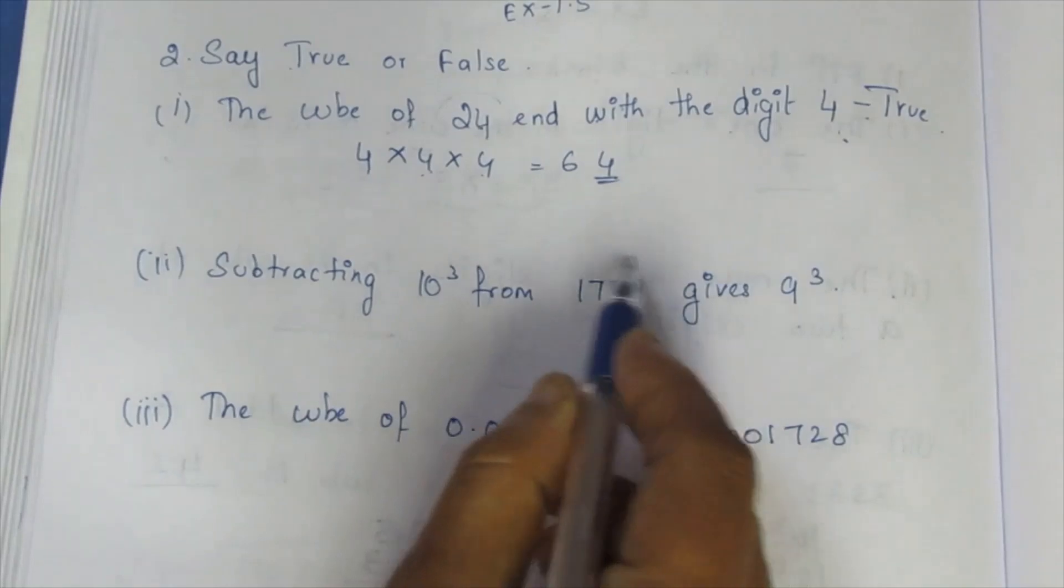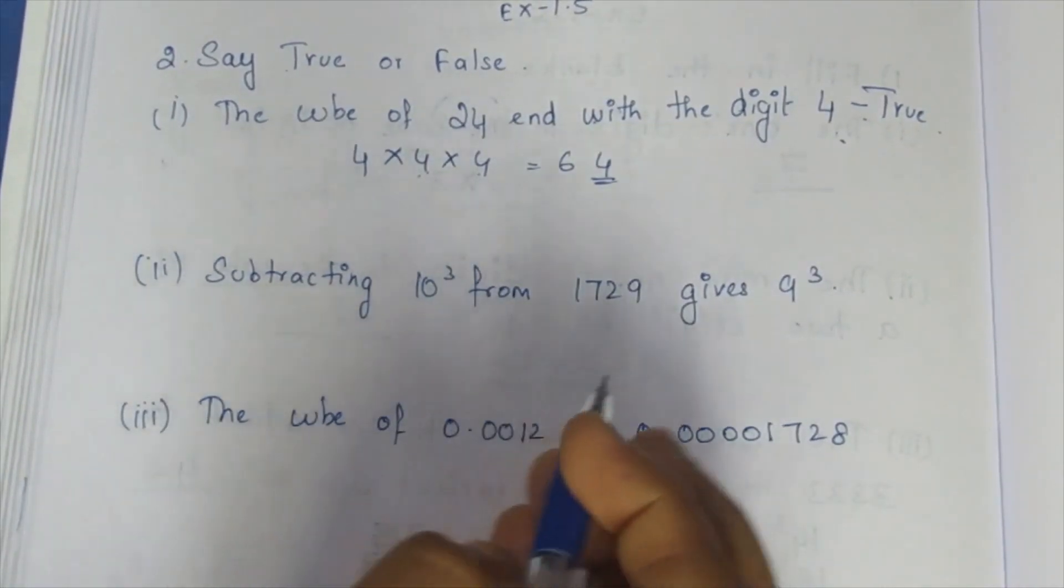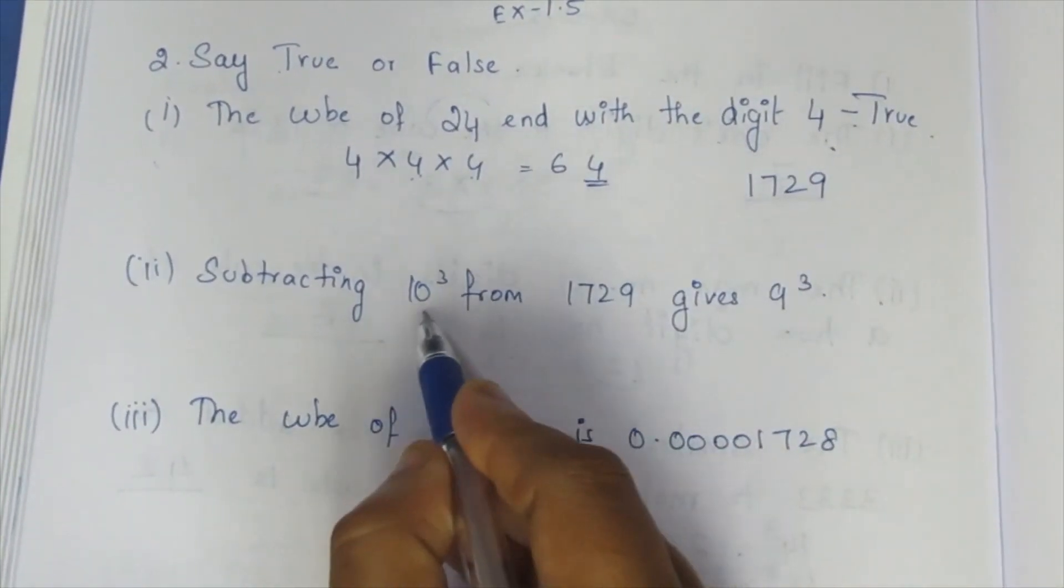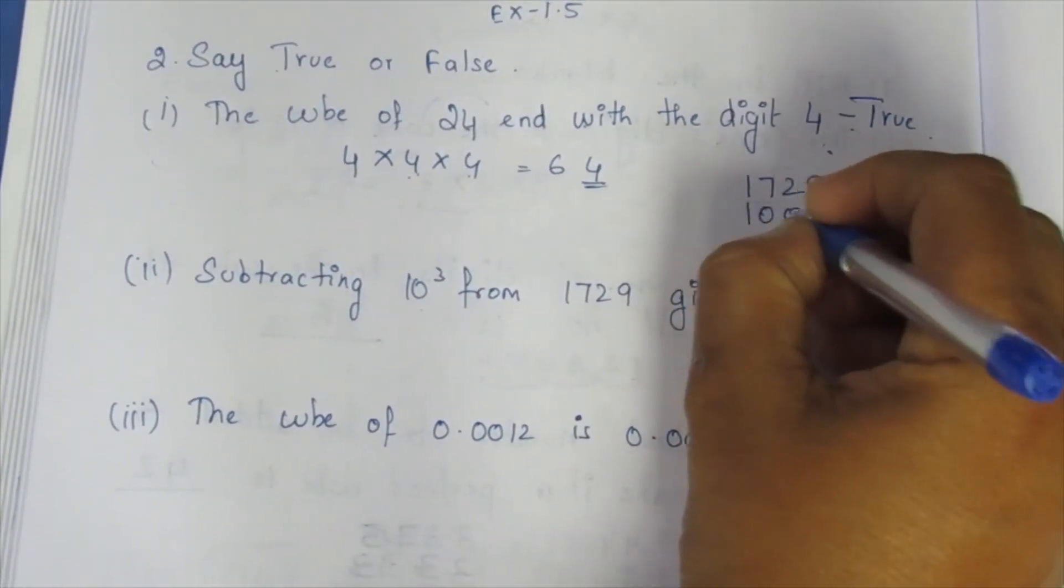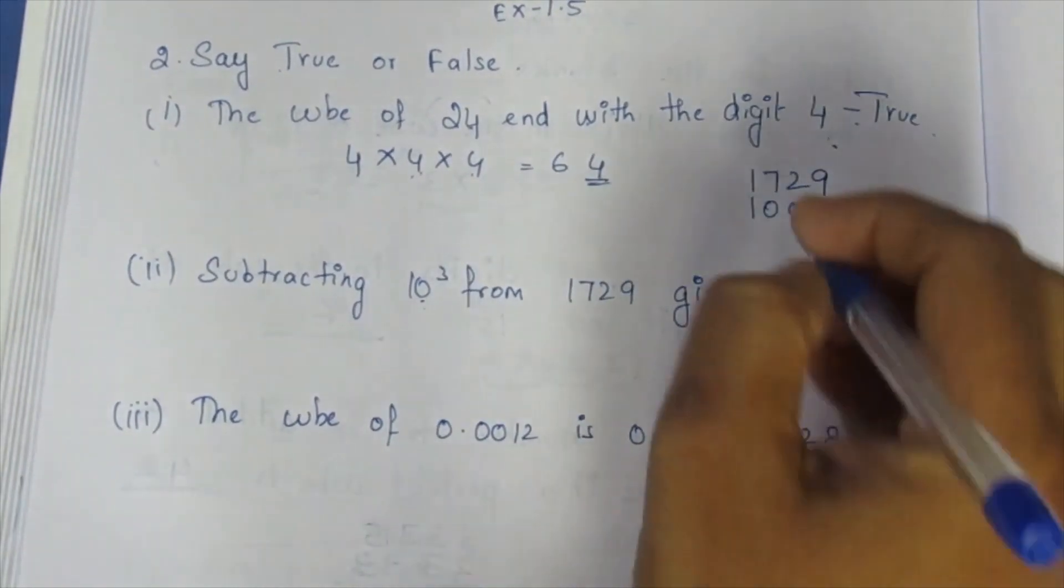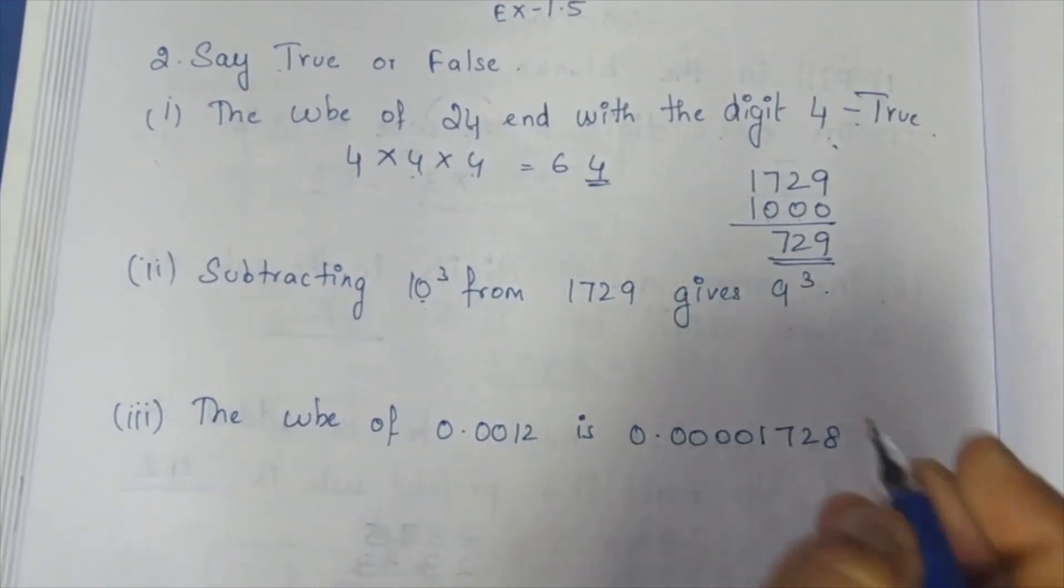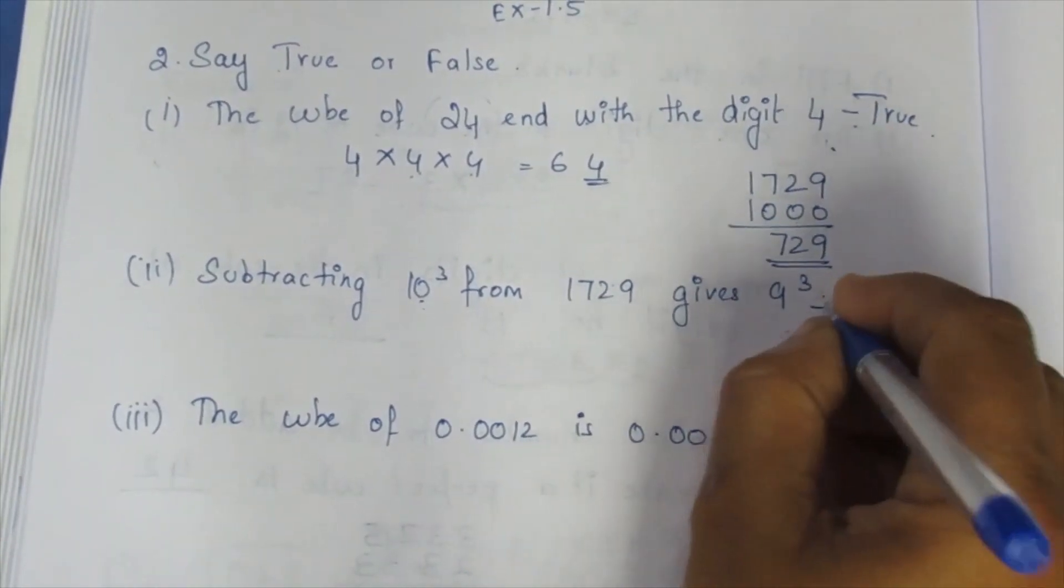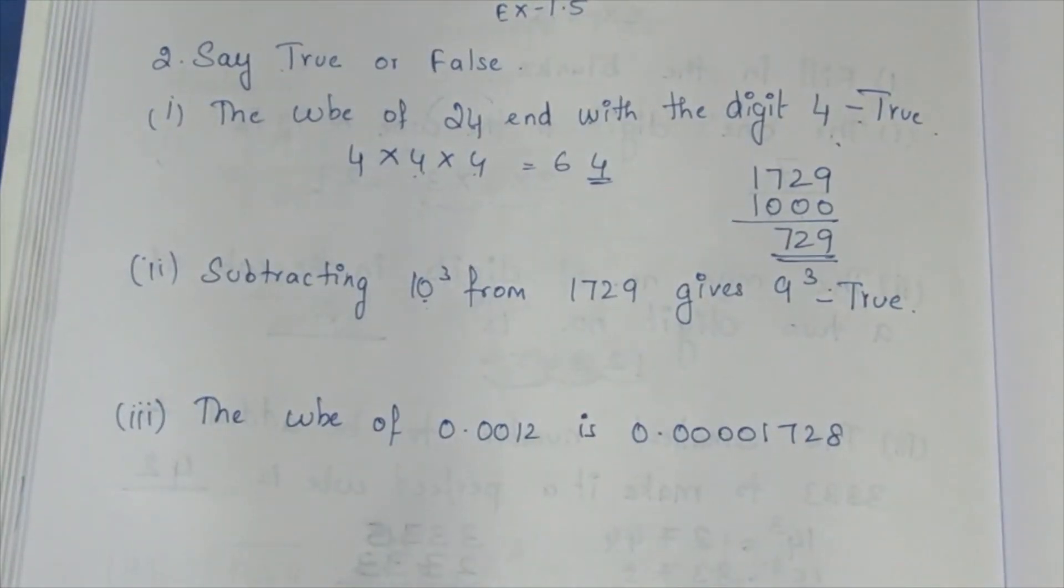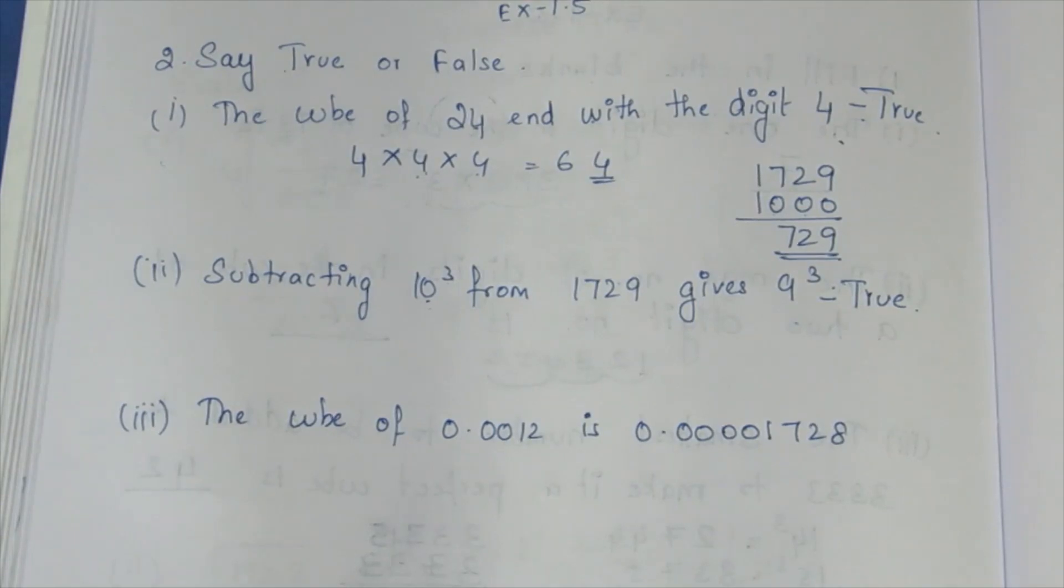Subtracting 10³ from this number. You can write it. Subtraction: 1729 subtracted by 10³. 10³ is 1000. Subtracting 729. Actually, 9³ is 729. Then the answer is true. If you do 10³, it will be very easy.